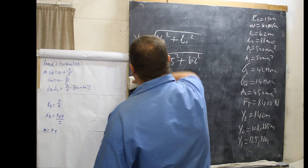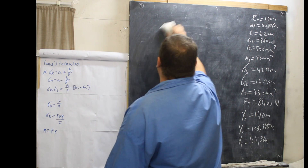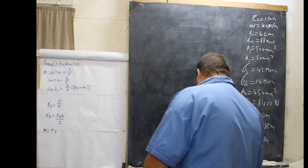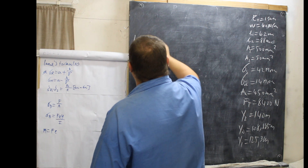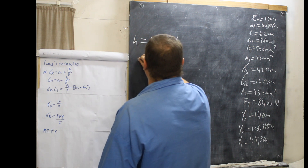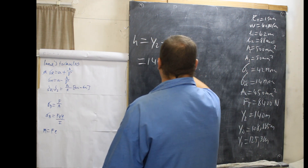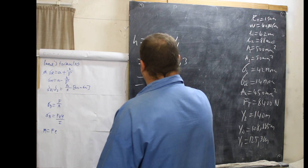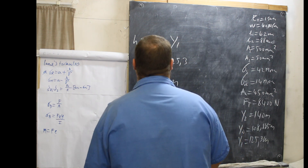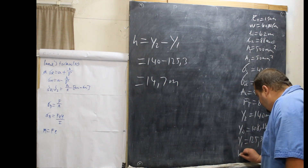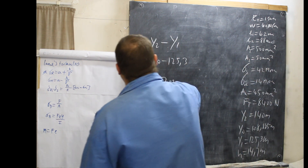We've worked out Y1 and Y2, so all we have to do is subtract. H equals Y2 minus Y1, which is 140 minus 125.3, giving us 14.7 metres. H may be important later.